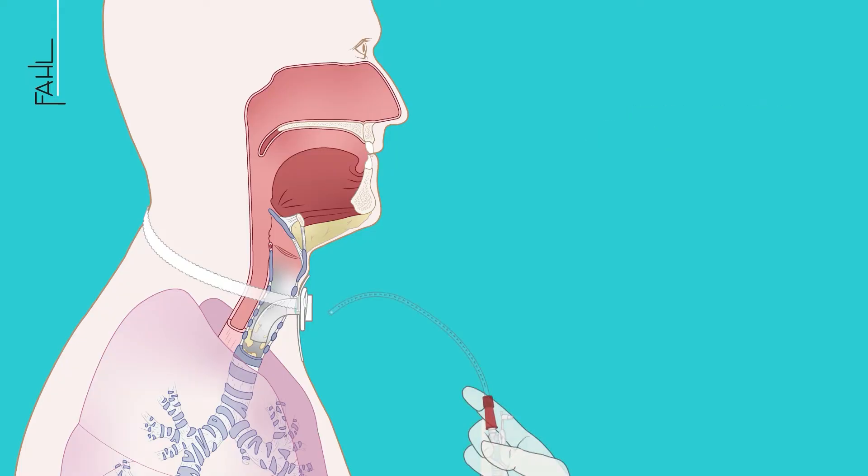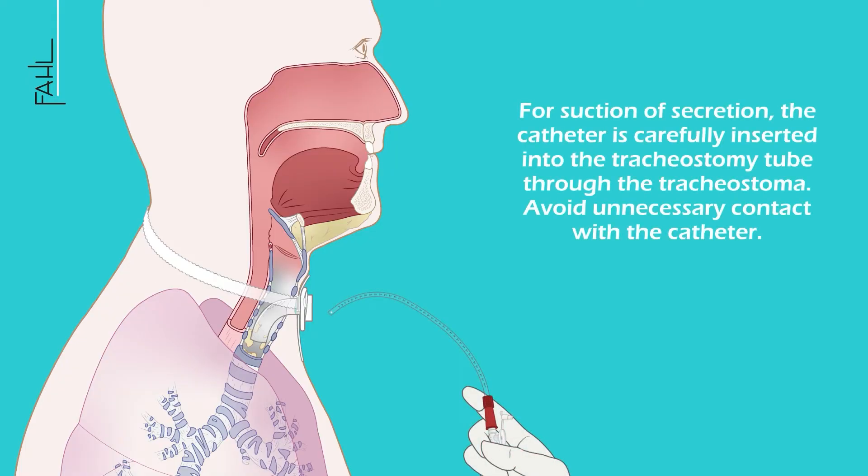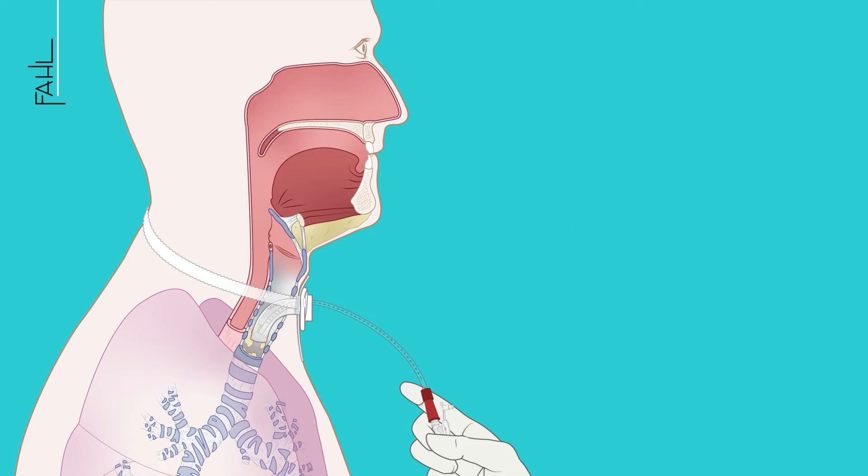For suction of secretion, the catheter is carefully inserted into the tracheostomy tube through the stoma. Avoid unnecessary contact with the catheter when doing so.